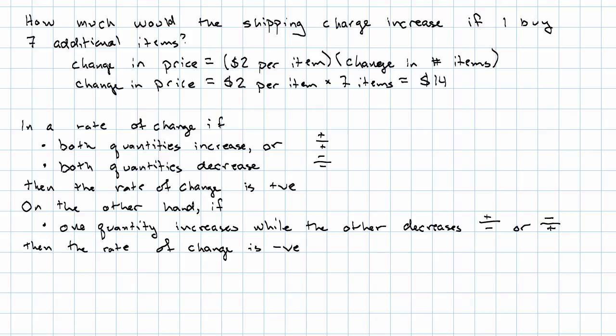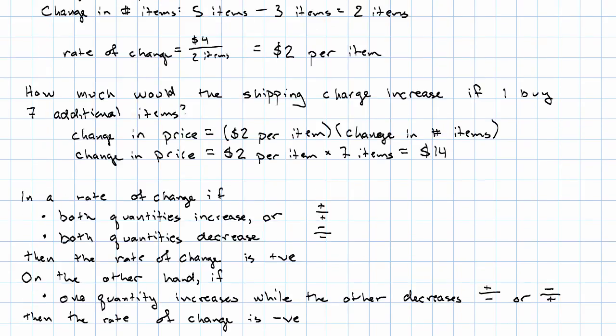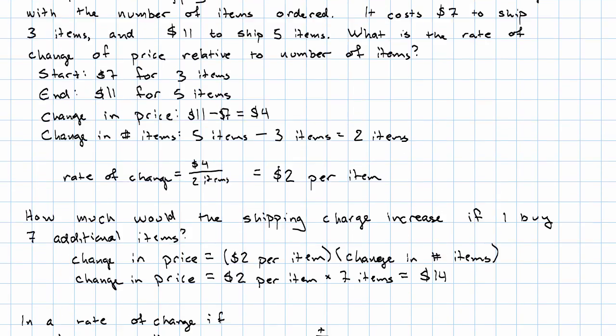You may have been wondering, in this example, how I knew to start at $7 for three and end at $11 for five, rather than the other way around. I actually get to pick.